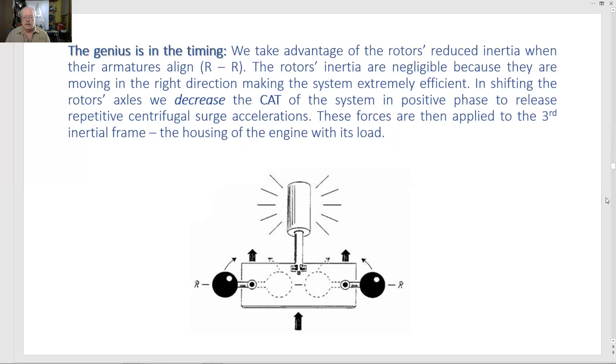The genius is in the timing. We take advantage of the rotors reduced inertia when their armatures align R to R. The rotors inertia are negligible because they are moving in the right direction, making the system extremely efficient. In shifting the rotors axles, we decrease the CAT of the system in positive phase to release repetitive centrifugal surge accelerations. These forces are then applied to the third inertial frame, the housing of the engine with its load.